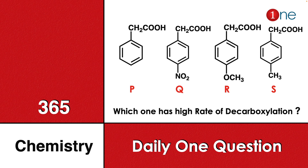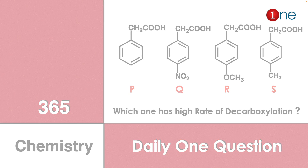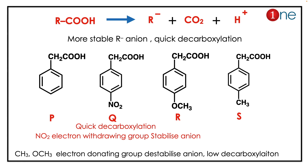You are varying the substitution at the para position and you have to find the rate of decarboxylation. To understand the rate of decarboxylation, you should know what is really happening — carboxylic acid normally decomposes into carbon dioxide, R⁻, and H⁺.